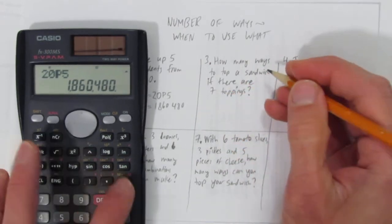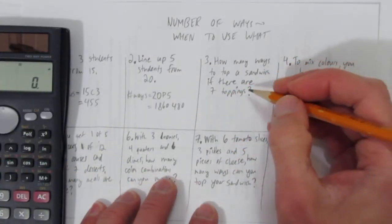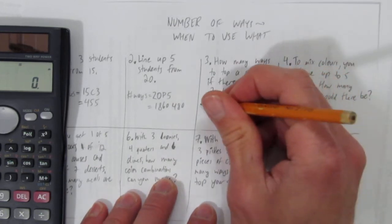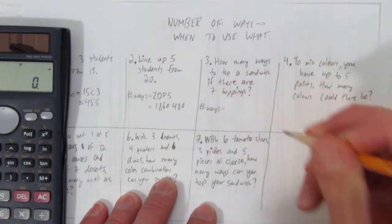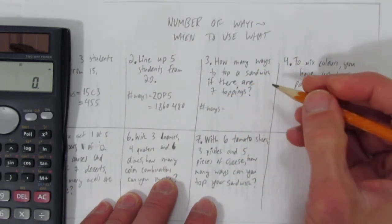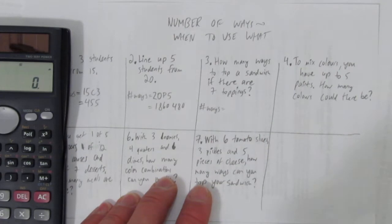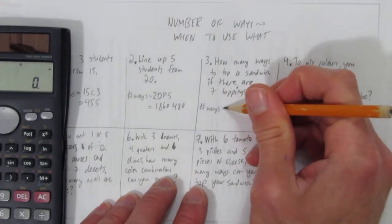Number three: how many different ways to top a sandwich if there are seven toppings? It uses the language 'ways', so I will too. If there are seven toppings, this is a good example of where students get confused. They're not sure what to do.